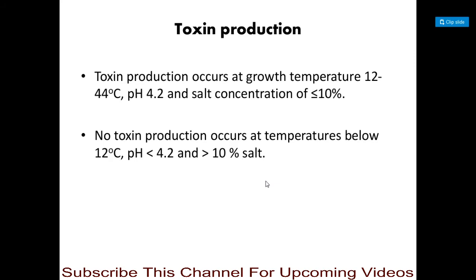Toxin production occurs at a growth temperature of 12 to 44 degrees Celsius, a pH of 4.2, and a salt concentration of greater than 10 percent. These are the favorable conditions for toxin production by Staphylococcus aureus. There is no toxin production at temperatures below 12 degrees Celsius, pH below 4.2, or salt concentration greater than 10 percent.